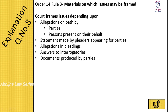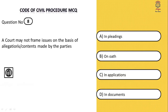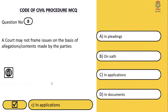The question asks what the court may NOT consider. Allegations in pleadings must be considered; allegations on oath must be considered; contents of documents must be considered. But allegations or contents made in applications should not be considered for framing of issues. The correct answer is C — in applications.